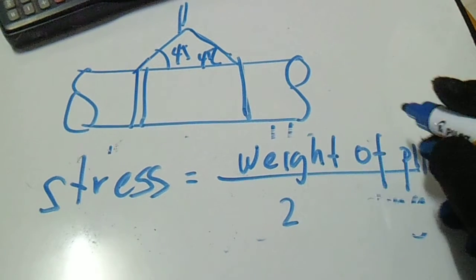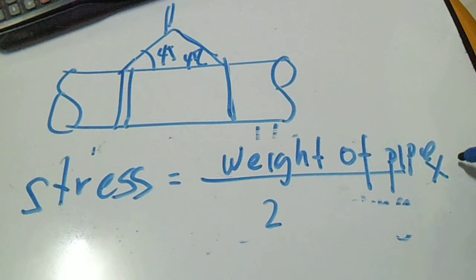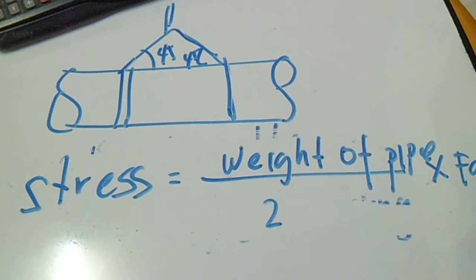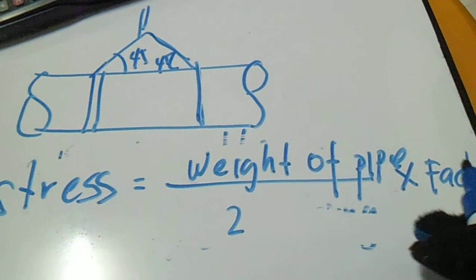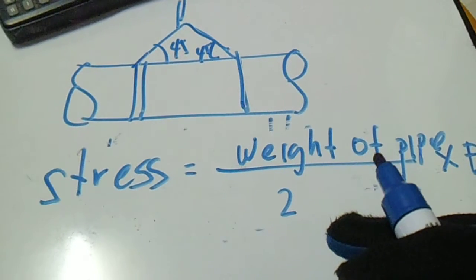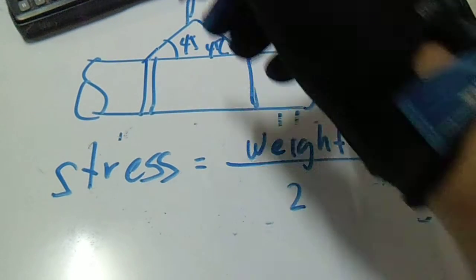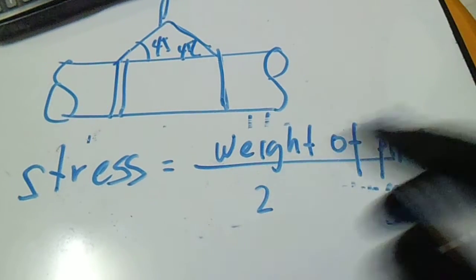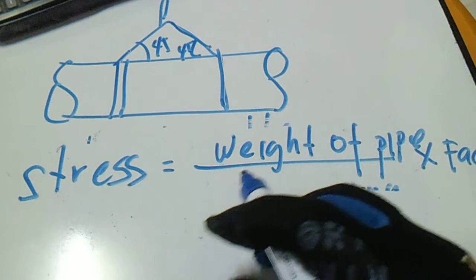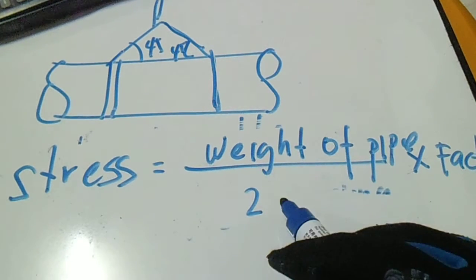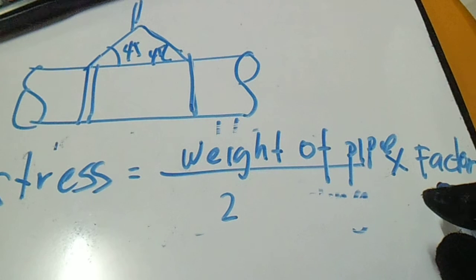...divided by two, multiplied by factor. So this is the formula of the stress of each sling. Stress of the sling equals to weight of pipe over two multiplied by factor.